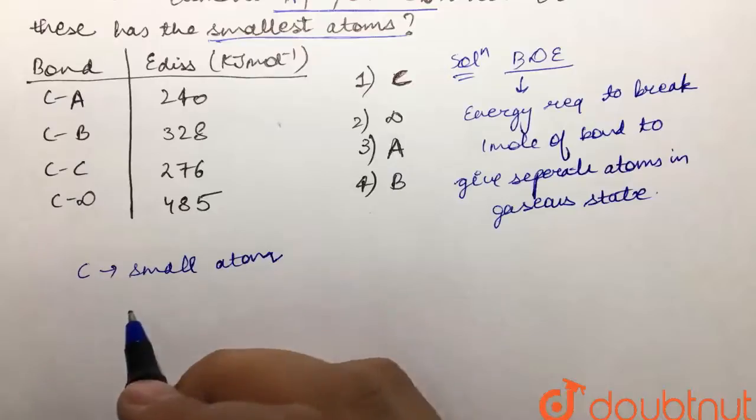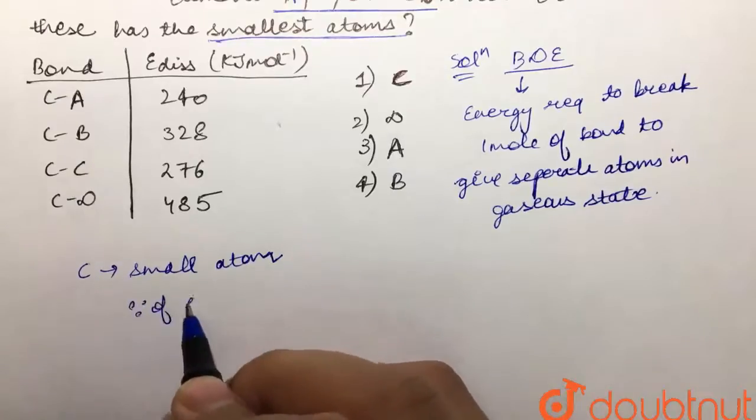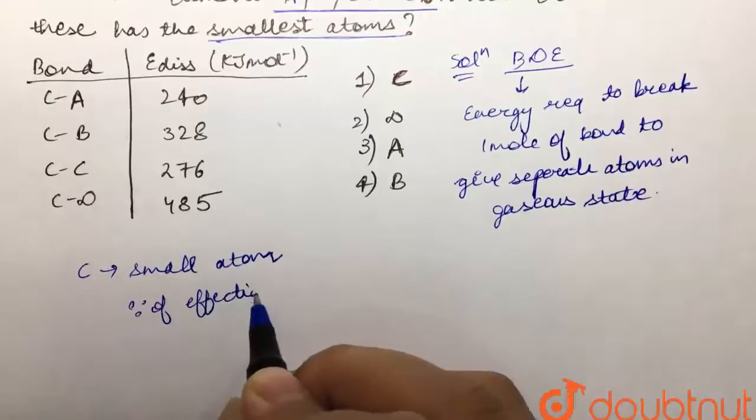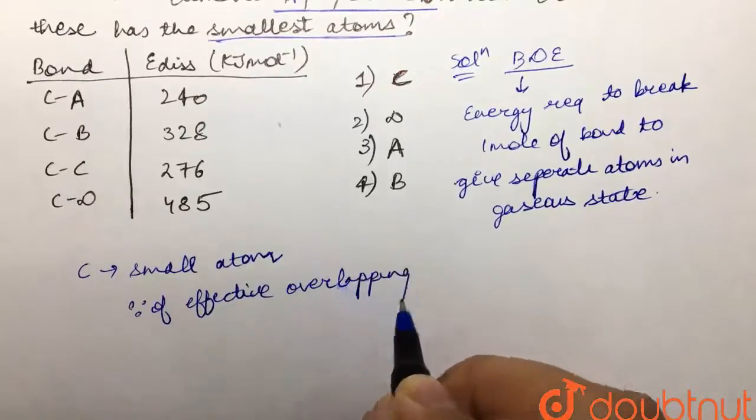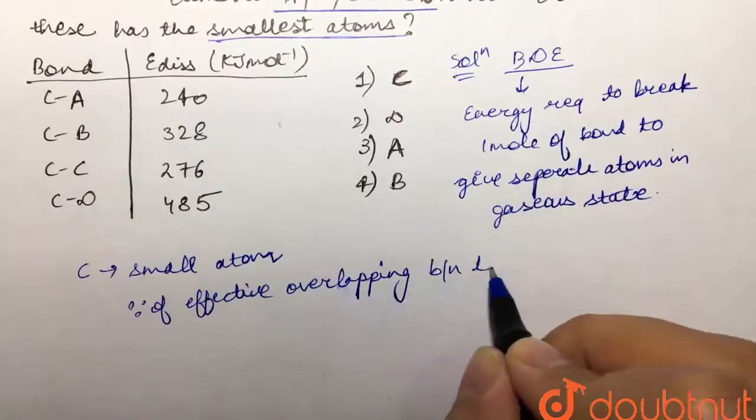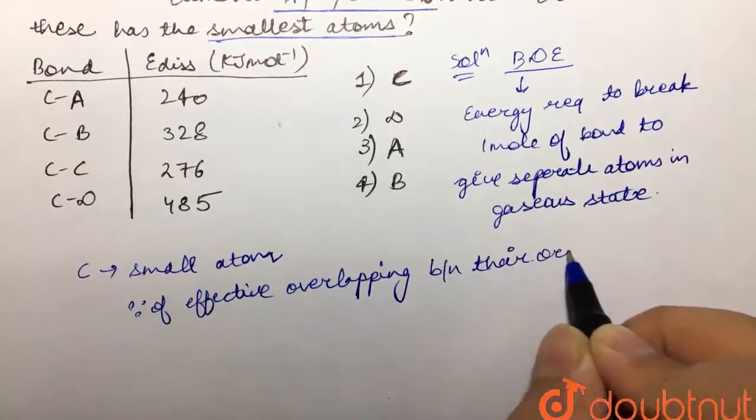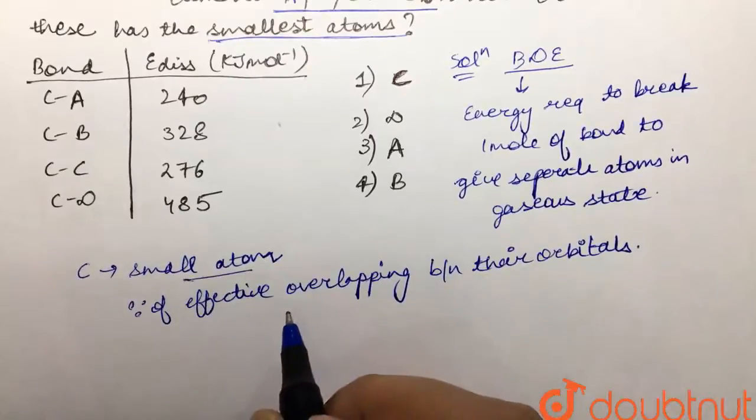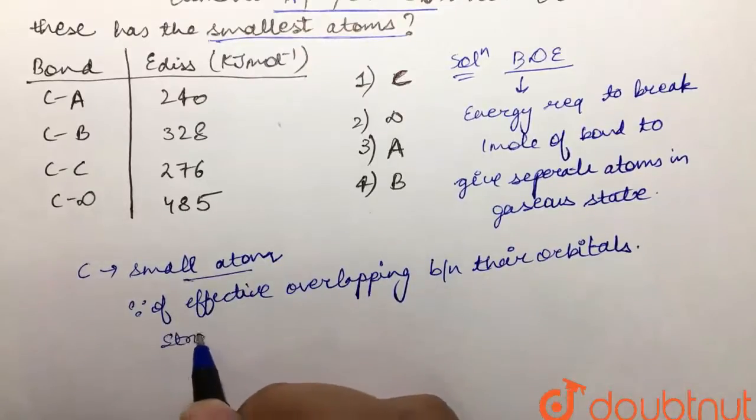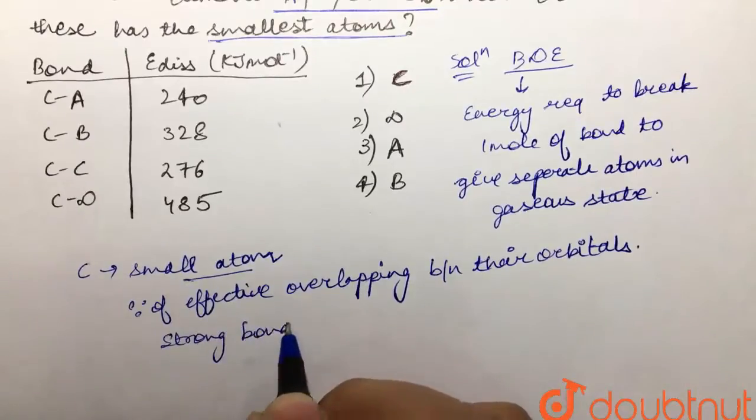Because of effective overlapping between their orbitals, it would make a strong bond with the small atom only. And hence the strong bond means that